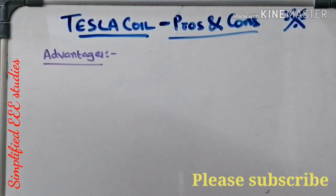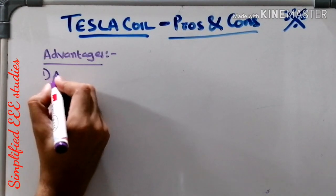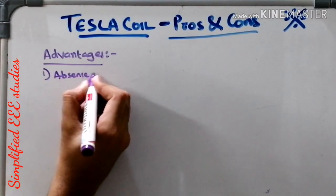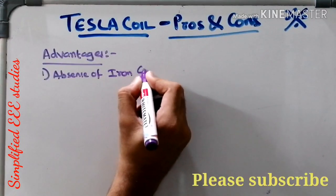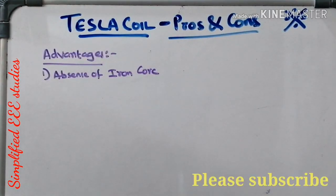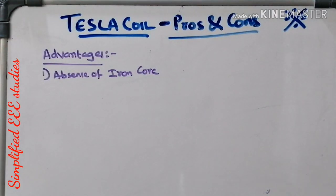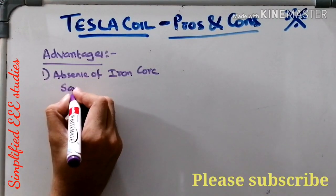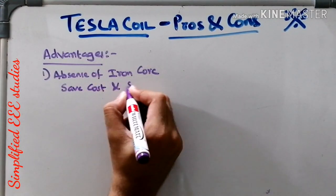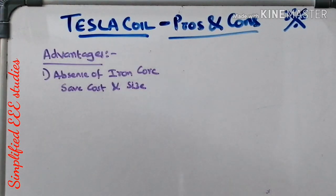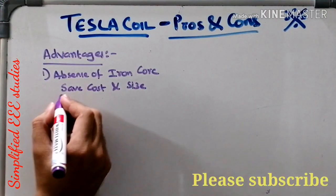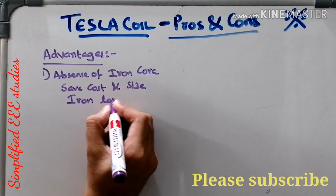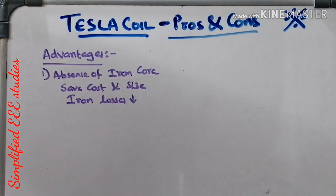The first advantage is the absence of an iron core. It is a purely air core inductor — there is no iron core available. Because of that, you can save cost and size. Additionally, iron losses can be minimized. That is one of the main benefits of using a Tesla coil.